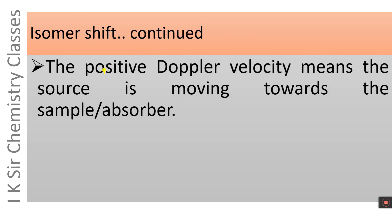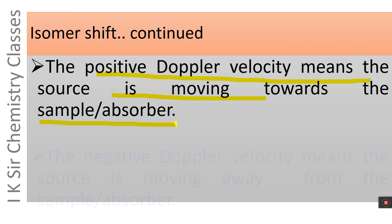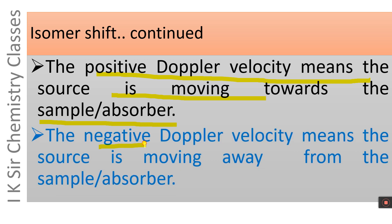The Doppler velocity may be positive or negative. A positive Doppler velocity means the source is moving towards the sample or absorber. A negative Doppler velocity indicates that the source is moving away from the absorber.